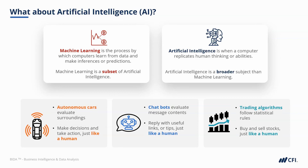So in summary, AI is a term used to describe when a computer behaves like a human. This can be a simple task or a complex one, like driving.